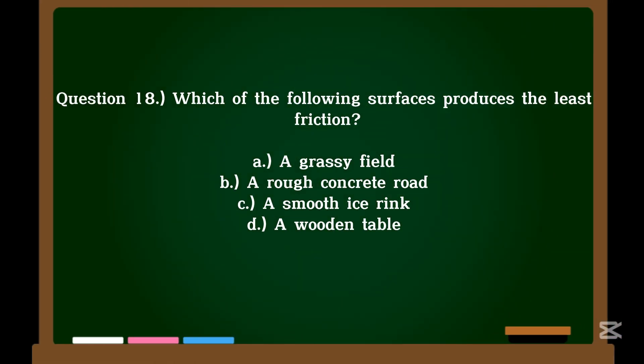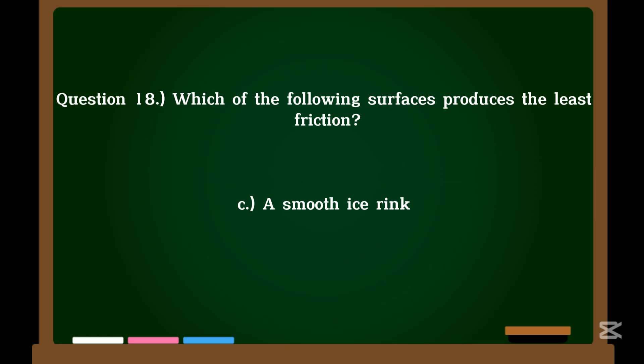Question 18. Which of the following surfaces produces the least friction? A. A grassy field. B. A rough concrete road. C. A smooth ice rink. D. A wooden table. Correct answer: C. A smooth ice rink.